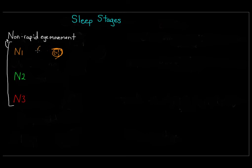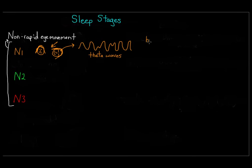N1 is the stage between sleep and wakefulness. This is when your brain starts producing theta waves. You might experience strange sensations known as hypnagogic hallucinations — these can include hearing or seeing things that aren't there, such as seeing a flash of light, or hearing someone calling your name, a phone ring, or a doorbell.